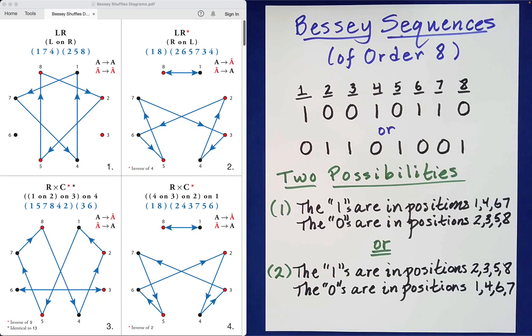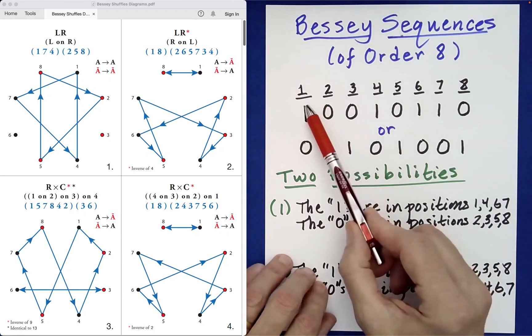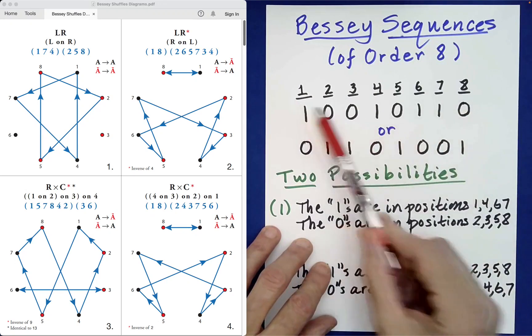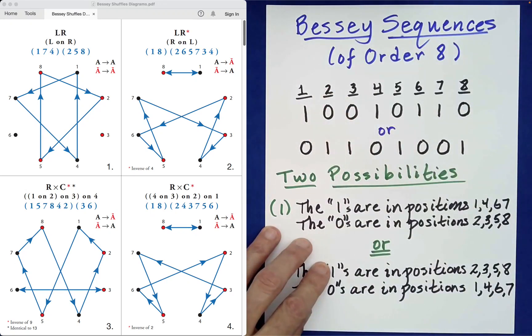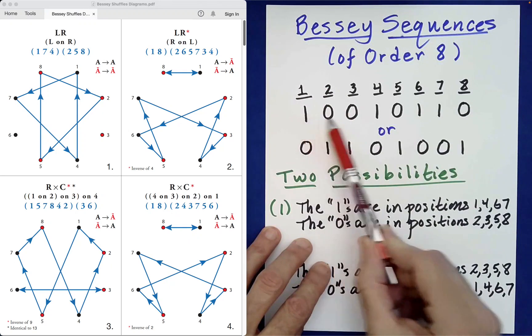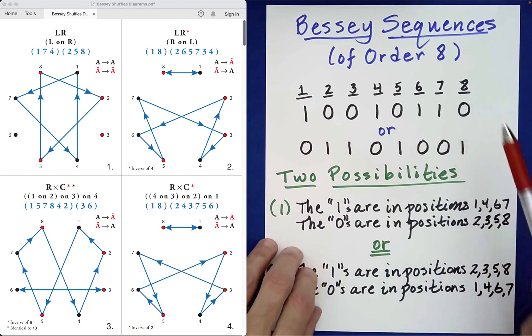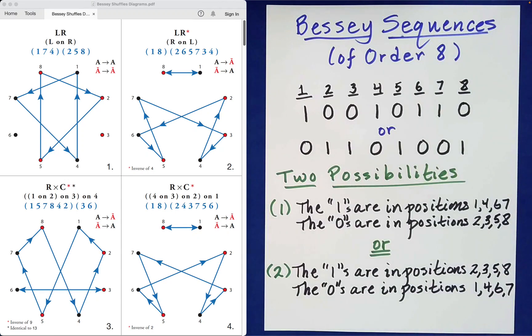To anchor the labeling of the positions of the elements of these sequences, I've listed 1 through 8, and then below those numbers I've indicated either a 1 or a 0. For Bessey sequences of order 8, there are only two possibilities.